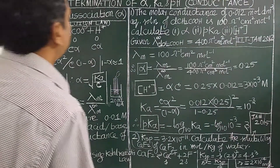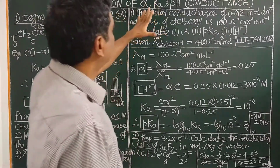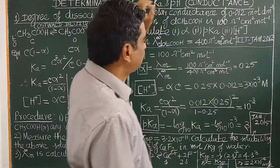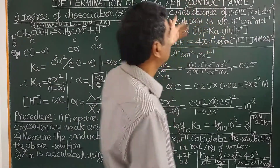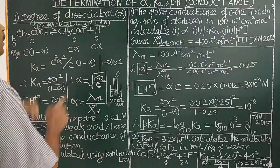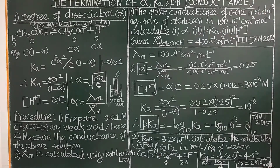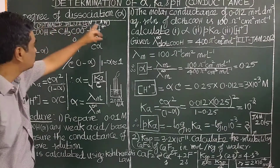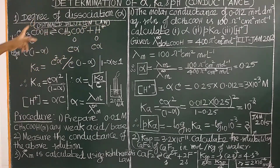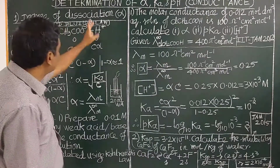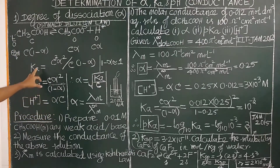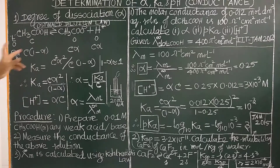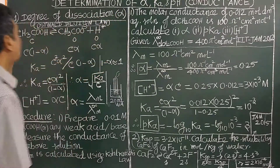We will talk about the degree of dissociation, dissociation constant, and pH law from conductance measurements. Using Ostwald's Dilution Law, the degree of dissociation can be calculated.